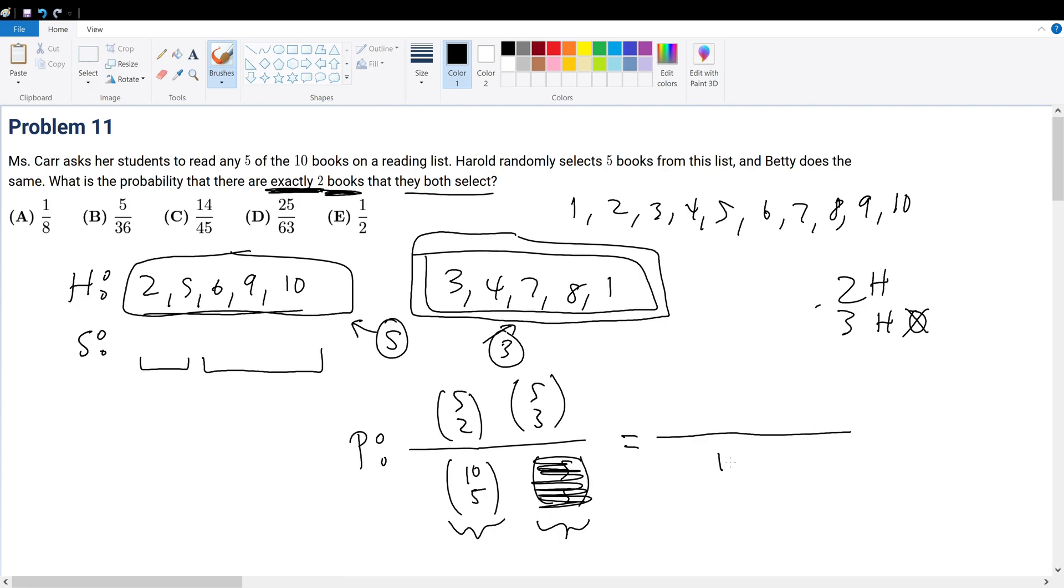Now, what is 10 pick 5? Well, that's 10 times 9 times 8 times 7 times 6, divided by 5 times 4 times 3 times 2. Now, what about the numerator? That is 5 times 4 times 5 times 4. With this, let's solve the question.